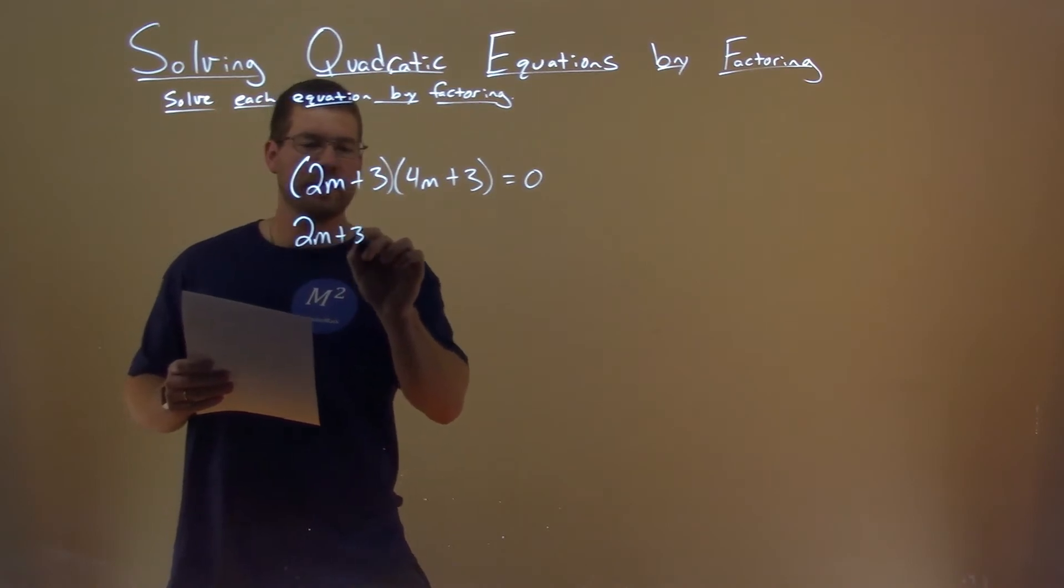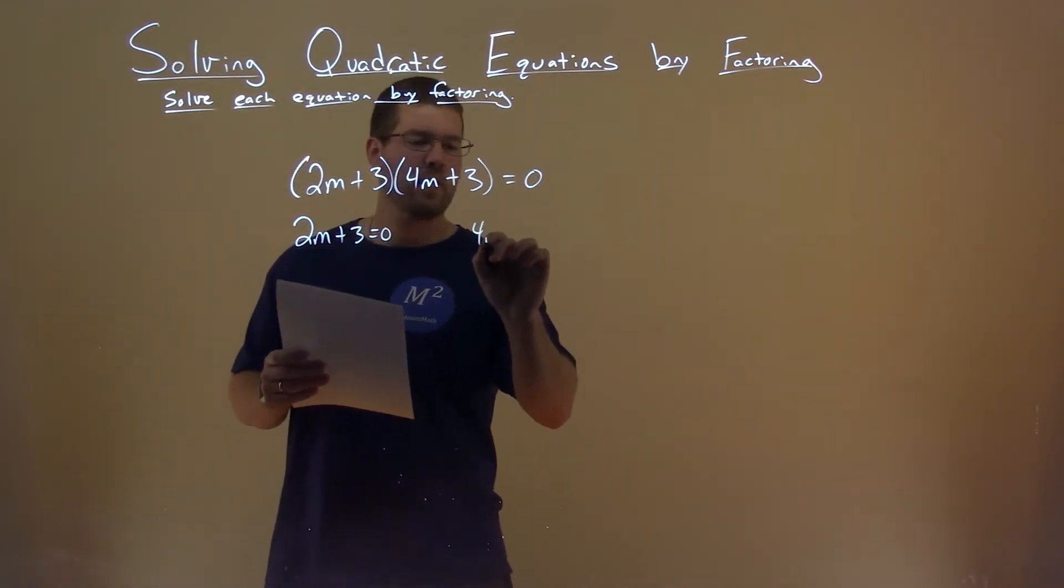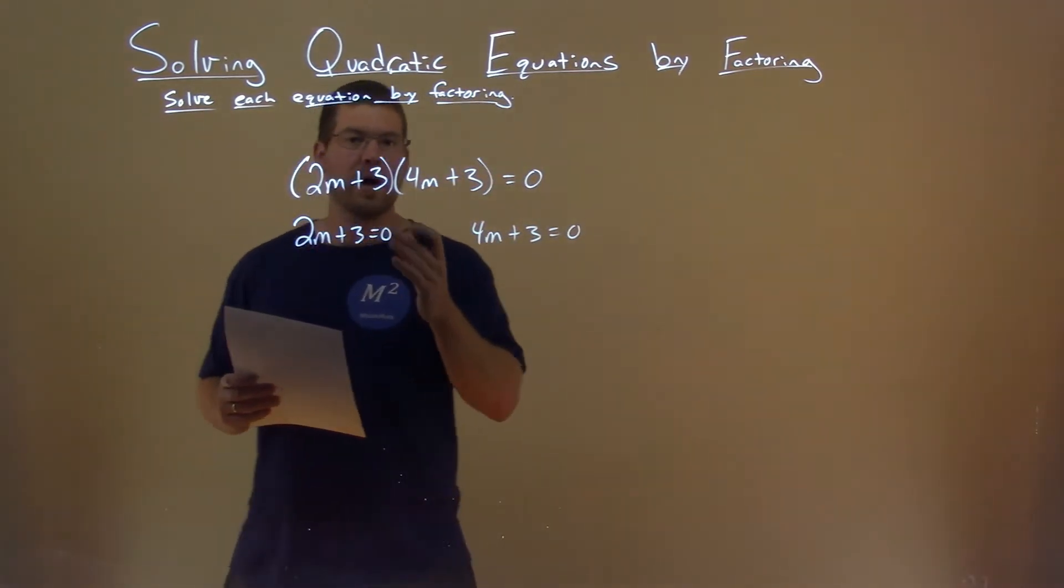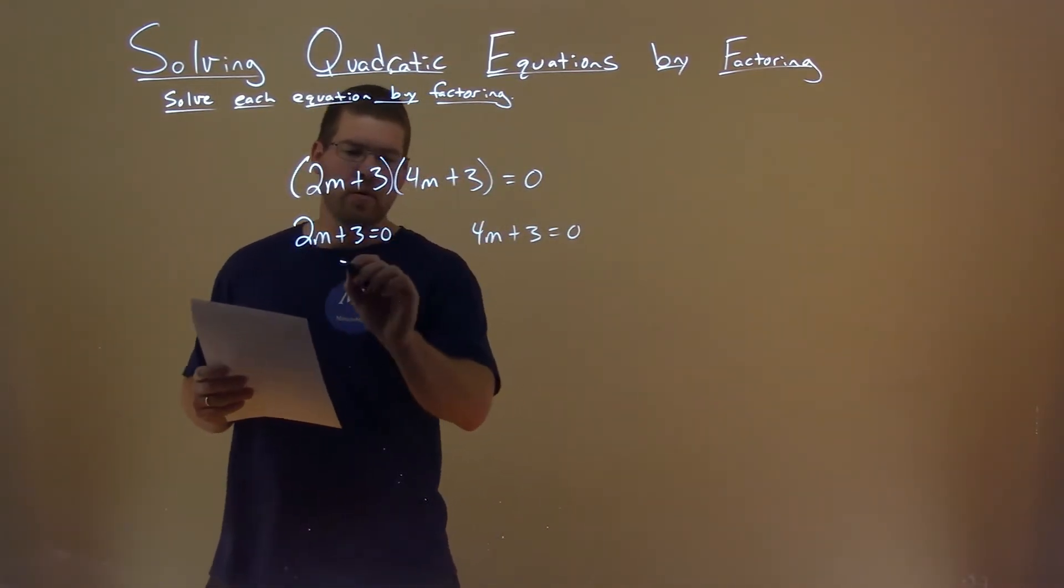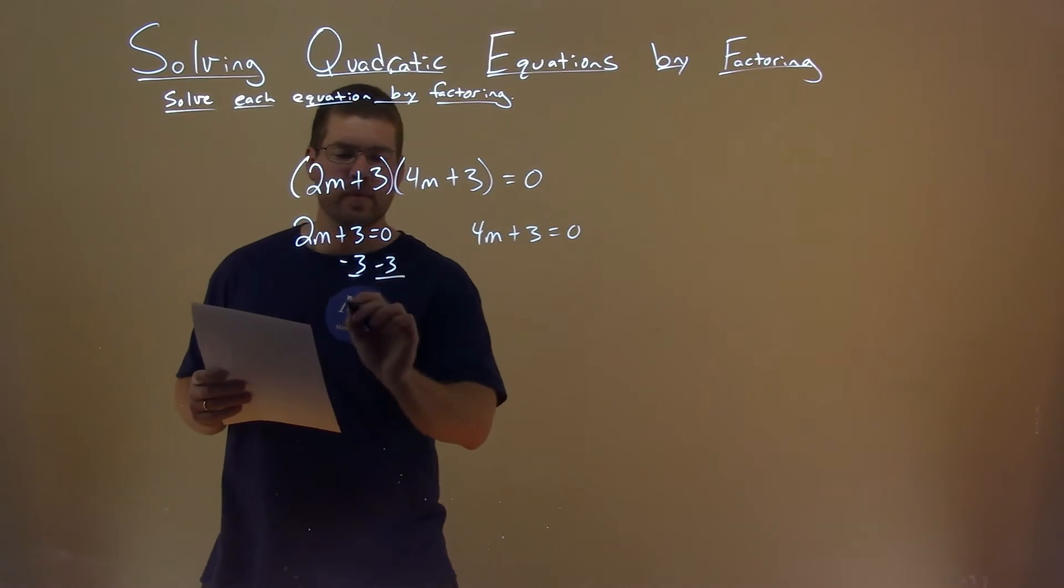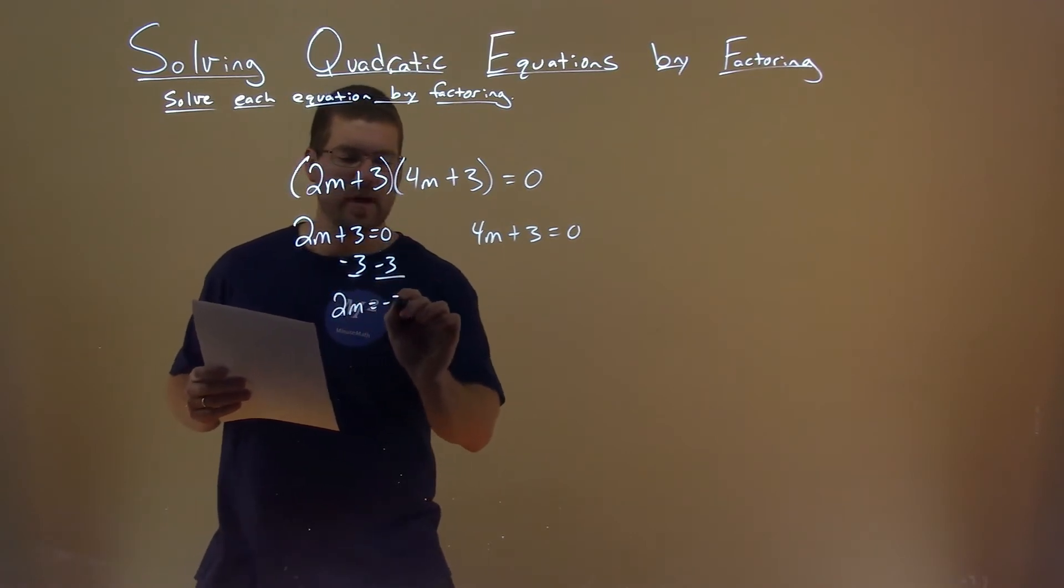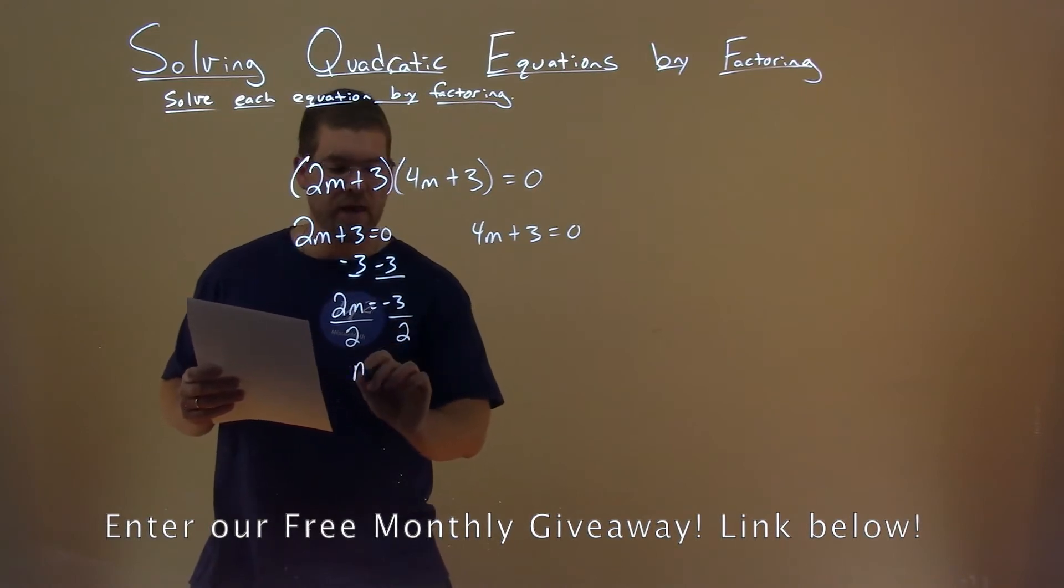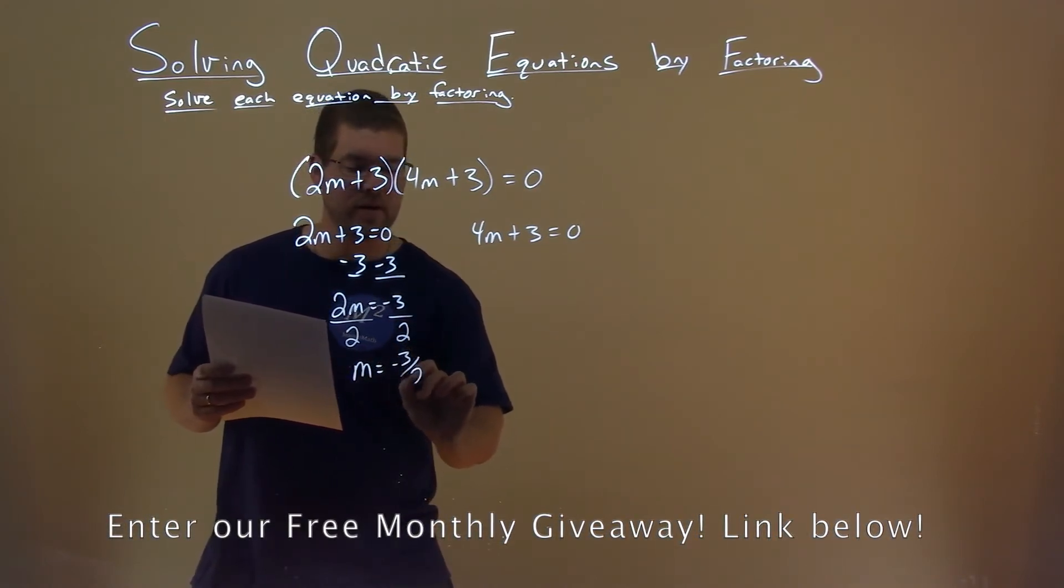2m plus 3 equals 0, and 4m plus 3 is equal to 0. So now we have to solve. We subtract the 3 from both sides, and 2m equals negative 3. Divide both sides by 2, and m equals negative 3 halves.